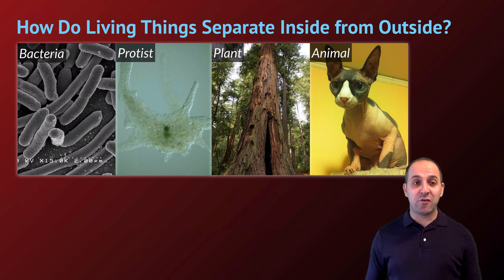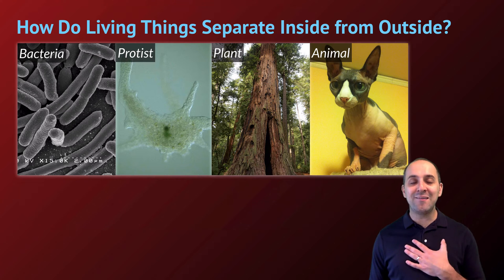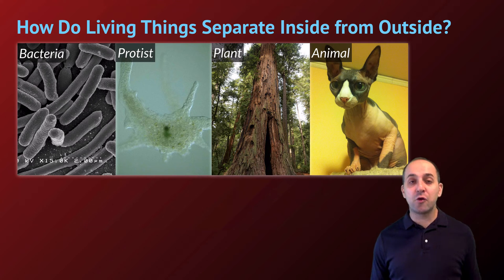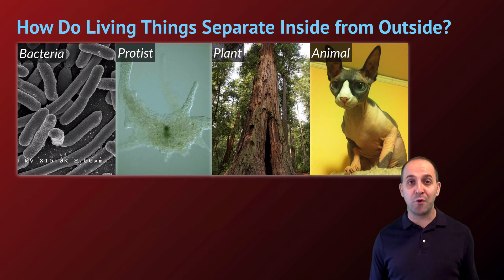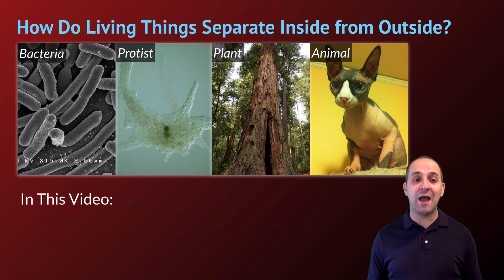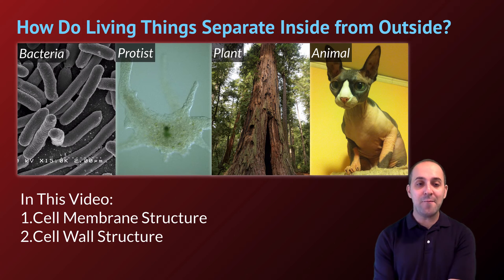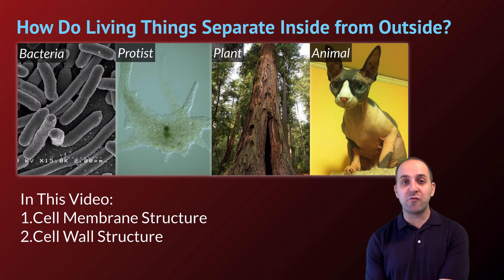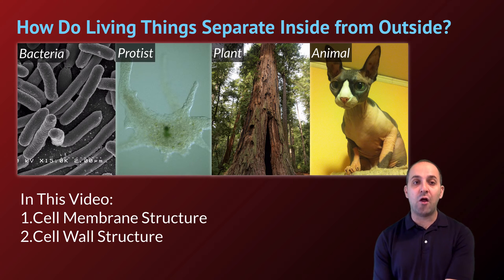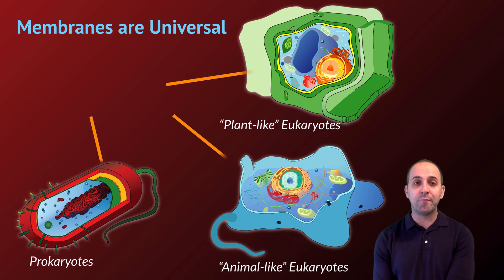The question we're going to be trying to answer here is: how do living things separate their inside from their outside? This may seem obvious to you, but it's incredibly important for living things to be able to accomplish that separation, and membranes are the way in which they do that. In this video, we're going to be talking about the structure of the cell membrane, and we'll talk briefly about the structure of cell walls. So let's go in.